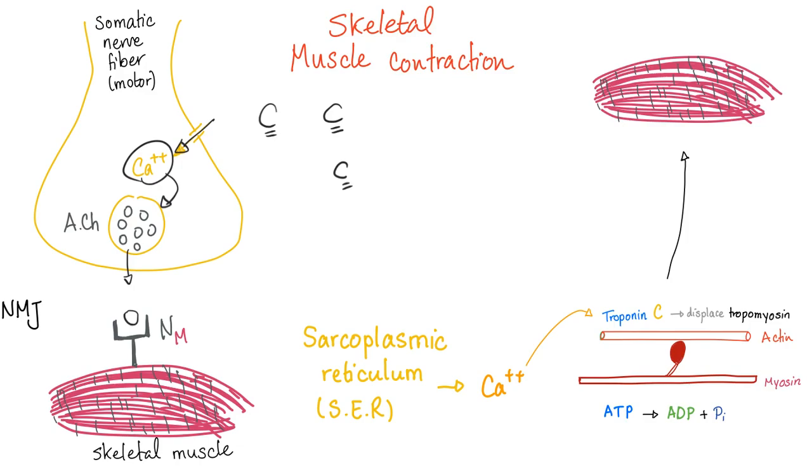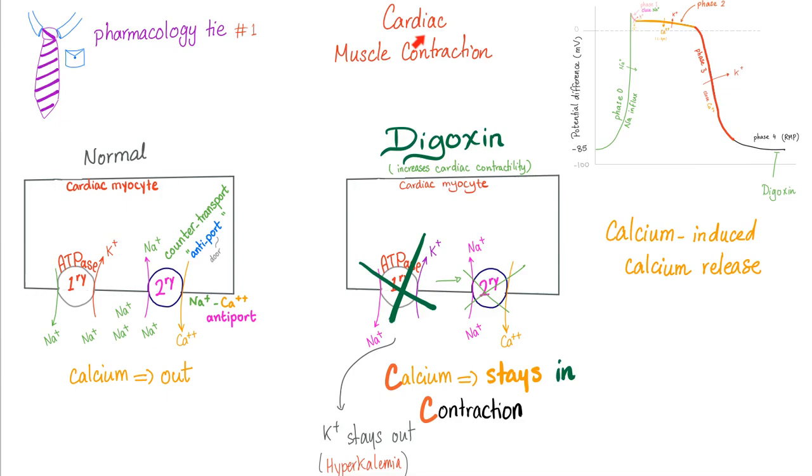Moreover, inside the muscle, there is a sarcoplasmic reticulum, which is a modified smooth endoplasmic reticulum. And then it has calcium. Not only this, it has calcium-induced calcium release. And then actin will bind to myosin and boom, you have muscle contraction. This was charged, ionized, physiologically active calcium.